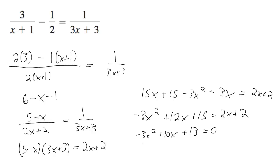Alright, so pull out negative 1. 3x squared minus 10x minus 13 equals 0.